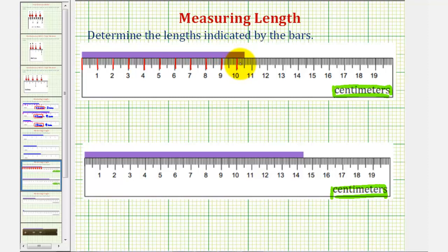So we have one, two, three, four, five-tenths of a centimeter longer than ten centimeters. So the total length would be ten and five-tenths of a centimeter, which we can write as ten point five centimeters using decimal notation. Or in fraction notation, we could say ten and five-tenths centimeters.